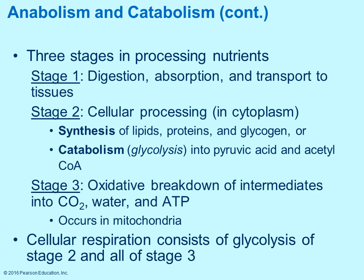To process any nutrients, there are three main stages. Stage one: digestion, absorption, and transport to tissues — most digestion occurs in the small intestines, it's absorbed and transported in the blood, goes to the liver first for filtering and detoxification, then sent to the rest of the tissues. Stage two is cellular processing in the cytoplasm — either synthesizing lipids, proteins, and glycogen, or undergoing catabolic reactions such as glycolysis. Step three is oxidative breakdown, producing carbon dioxide, water, and ATP in the mitochondria.